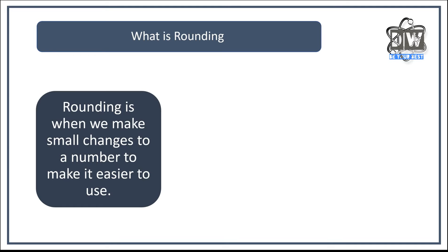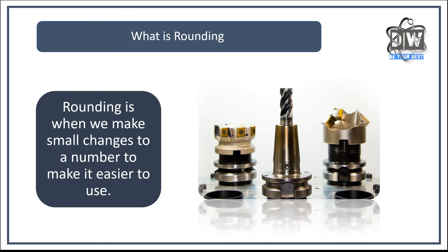Examples of that might be when you're working something out on your calculator like a fraction and you have an answer with six, seven, or eight numbers after the decimal place, and you're told to round it to two decimal places. That's the type of thing we're going to use all the time in maths. It's like woodworking tools — they're there just to shave off a little bit of wood, not to cut the wood in half, but just to round off those sharp edges. That's what we're doing with rounding.